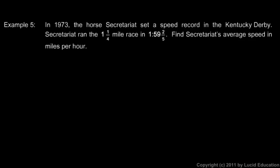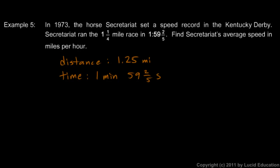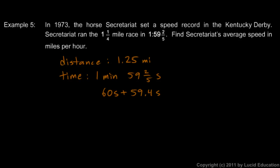The distance is one and a quarter miles, which we'll write as 1.25 miles. The time is one minute and 59 and two-fifths seconds. To make this easier to work with, I'll convert: one minute becomes 60 seconds, and two-fifths is 0.4, so we have 60 seconds plus 59.4 seconds.